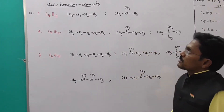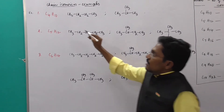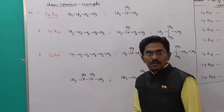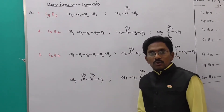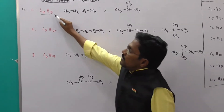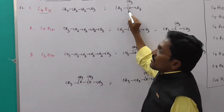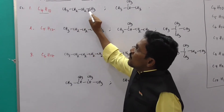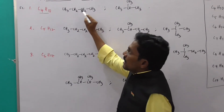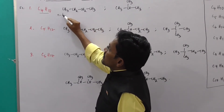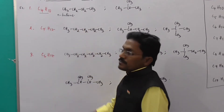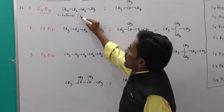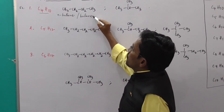Here are examples for chain isomerism. Let us take the molecule having formula C4H10. For this molecular formula we can write two molecules. The first is 1-2-3-4 carbons, which means butyl, so it is n-butane, or simply butane.